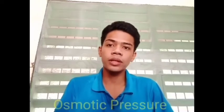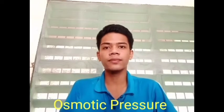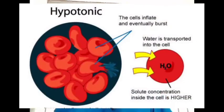pH level is not the only factor that affects microbial growth. Osmotic pressure is also a very important factor. Osmotic pressure is the force of water that exerts on a semi-permeable membrane of the cell. When microbes are exposed to a hypotonic environment, where the concentration of solute is much lower than inside the cell, water rushes into the cell and the cell eventually bursts.